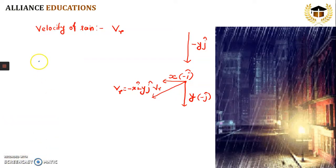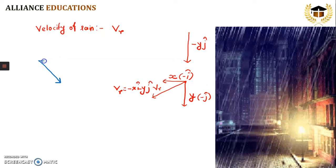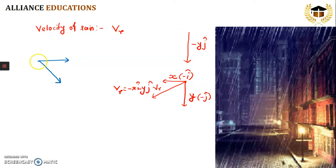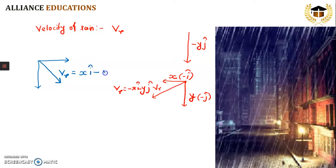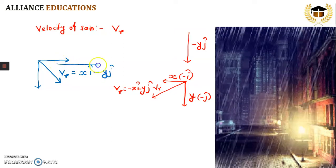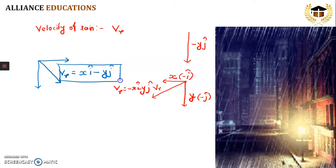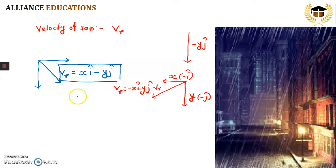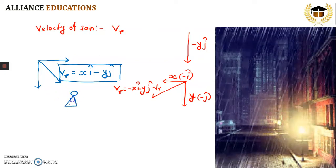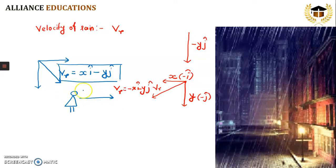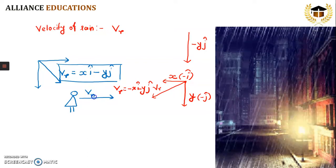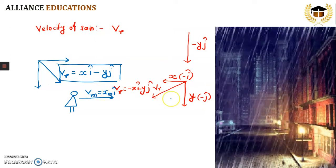But in case the direction of rainfall is such that we have positive x-axis and negative y-axis, then in this case velocity of rain will be xi minus yj. This is the standard representation of velocity of rain. Now suppose there is a person walking along the positive direction of the x-axis, so the velocity of man can be written as xm·i, because he is going in the positive direction.